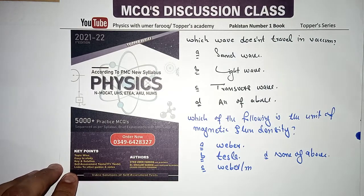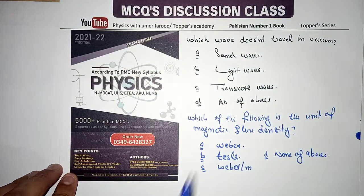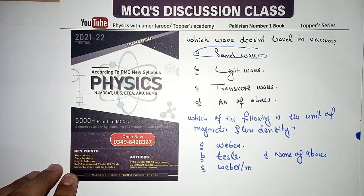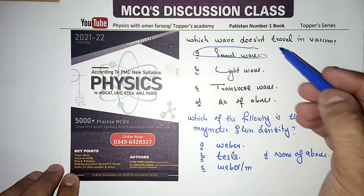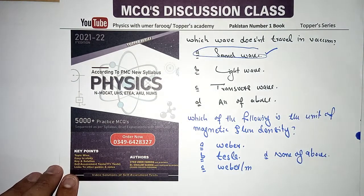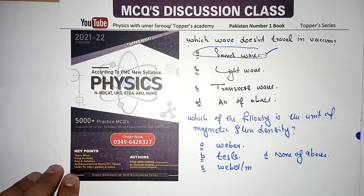You might think transverse waves and light waves are also listed, so which one is correct? Sound wave is a longitudinal wave which does not travel in a vacuum. So that option is the correct one. Now number three: which of the following is a unit of magnetic flux density — weber, tesla, weber per meter, or none of above?